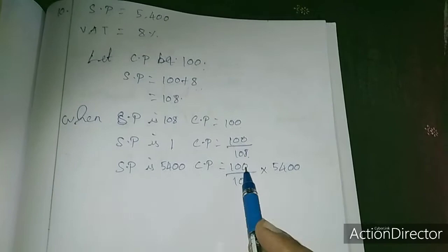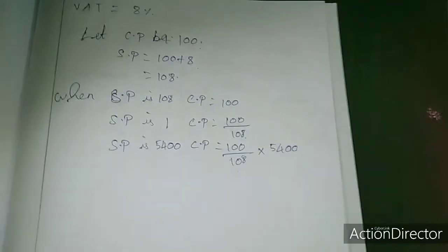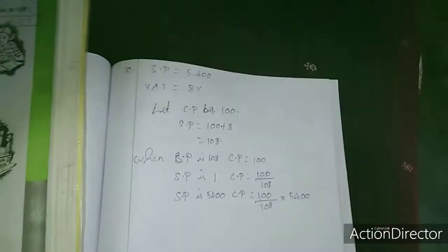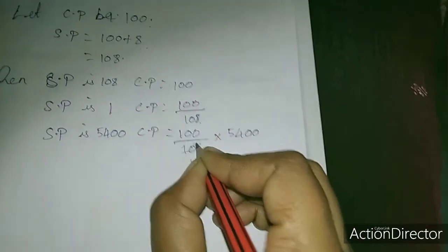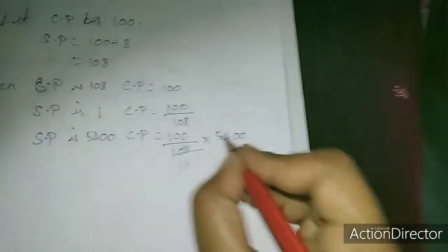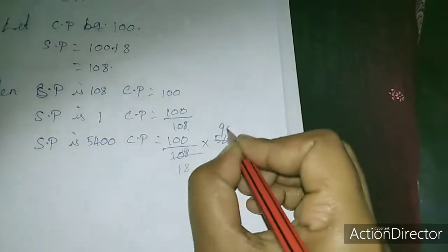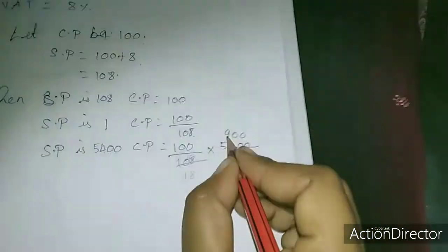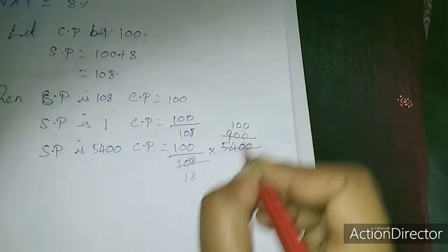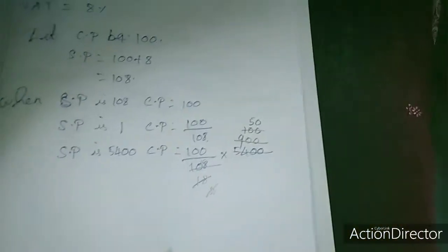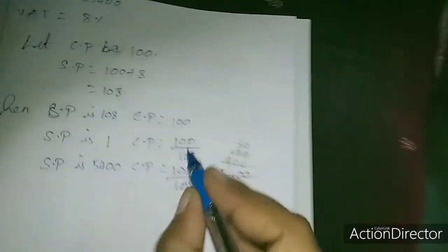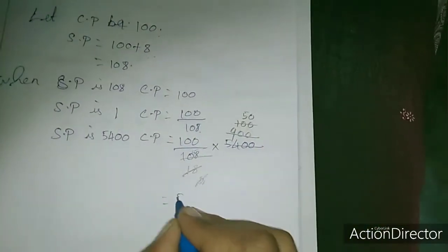So 108 equals 5,400. Cost price equals 5,400 divided by 108 times 100. If we cancel, I am canceling by 6 table: 1, 66, 6, 4, 86 are 48, 96 are 54. This gives us 50, so cost price is 15 into 100, which equals 5,000.